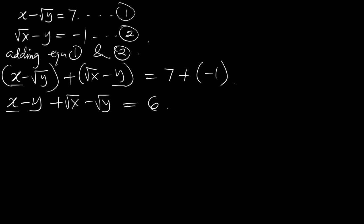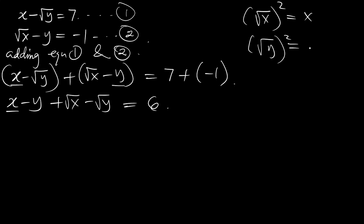Now, according to the SORD rule, we know that the square root of x, all squared, is equal to x. The square root of y, all squared, is equal to y. So now applying this rule here — wherever we see x we replace it with this, wherever we see y we replace it with this.